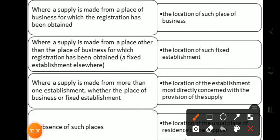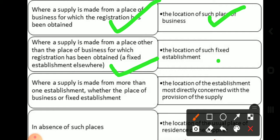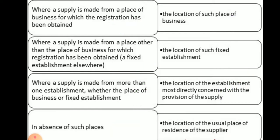General rule की यदि हम बात करें, तो इसमें — that location will be place of supply. Where a supply is made from more than one establishment, whether the place of business or fixed establishment, then the location of establishment most directly concerned with the provision of supply. In absence of such places, the location of the usual place of residence of the supplier will be taken as place of supply.